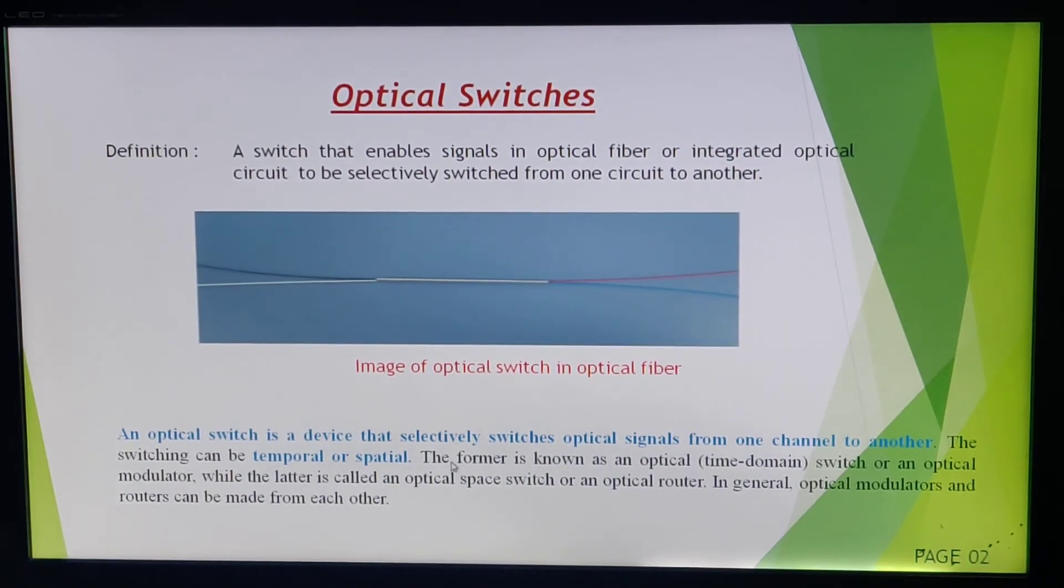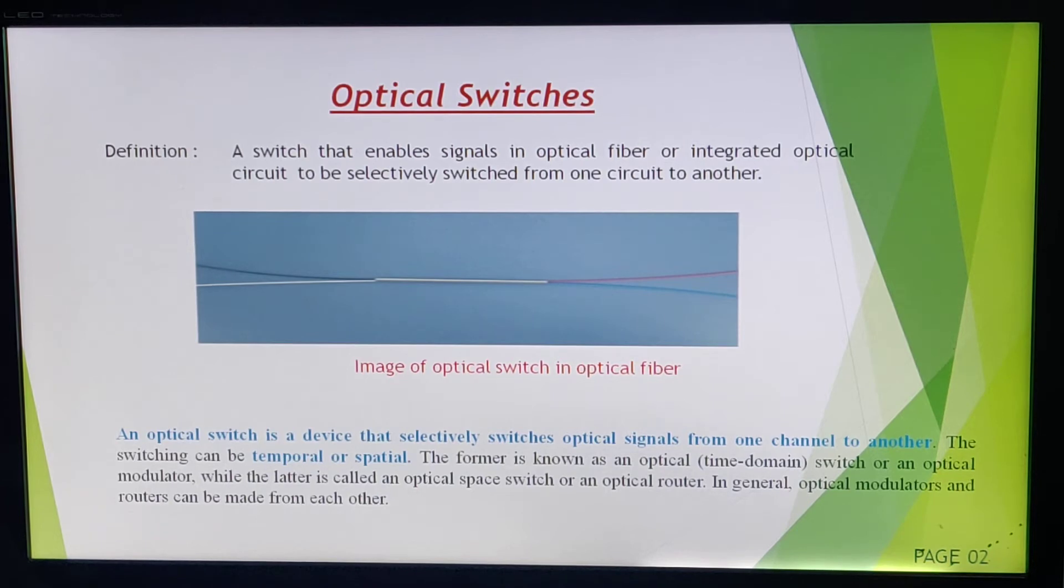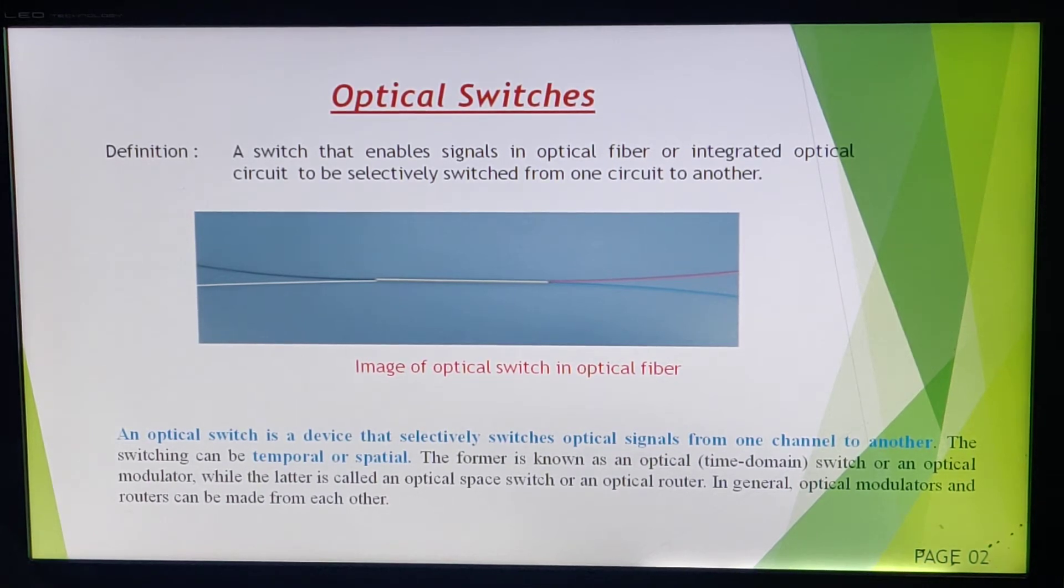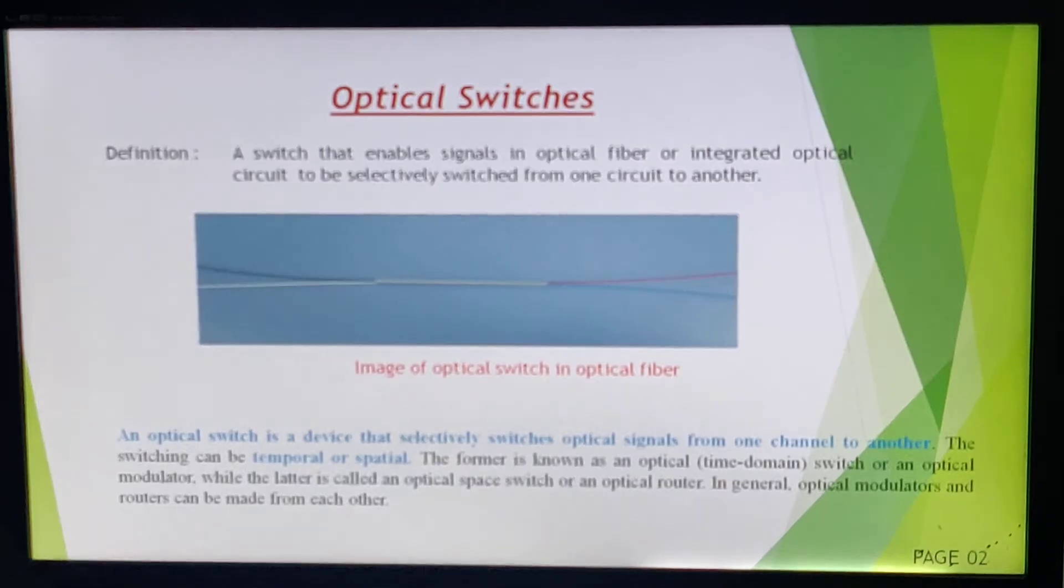An optical switch is a device that selectively switches optical signal from one channel to another. There are two types of optical switching: one is temporal, other is spatial. Whenever we are considering time domain optical switching, it is known as an optical modulator. The latter one is known as optical space switch or an optical router. We can use any of them depending on our usage.